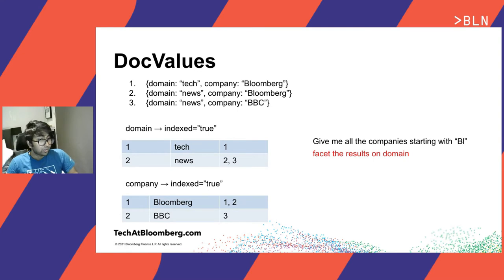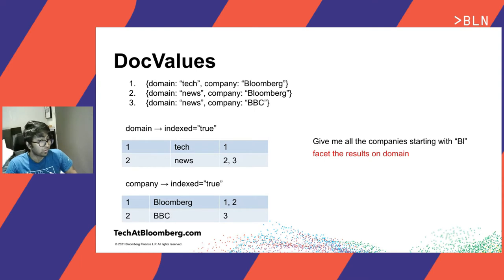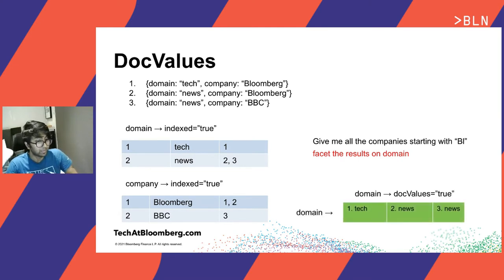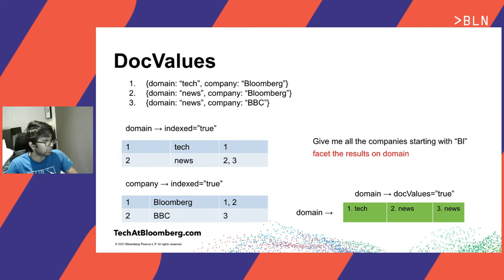What if the query also had a facet part asking Solr to facet results based on the 'domain' field? Solr would have to know the values stored in the domain field for the matched documents, which is not straightforward from an inverted index. This is where doc values come into play. If the field 'domain' was marked as a doc value, Solr would store a column-based data structure. It can then very quickly find the value of the field 'domain' for the matched documents. This is how doc values speed up faceting — and not just faceting, but other features like sorting as well.